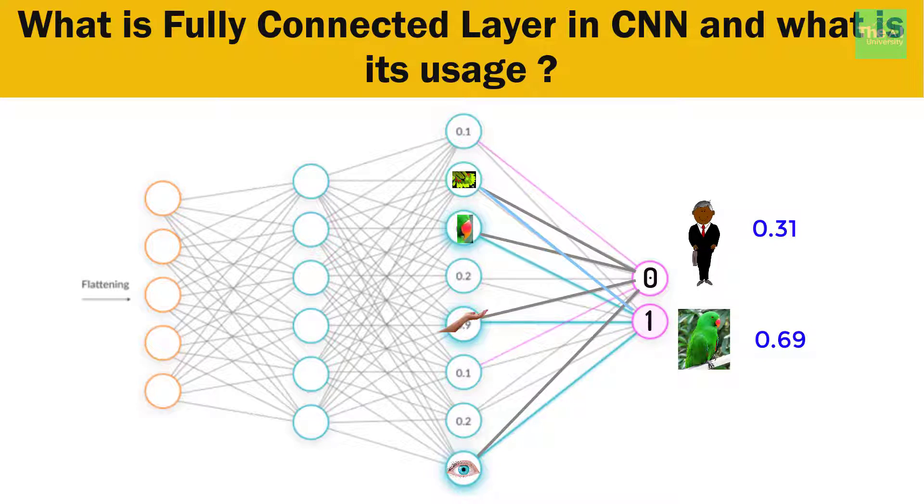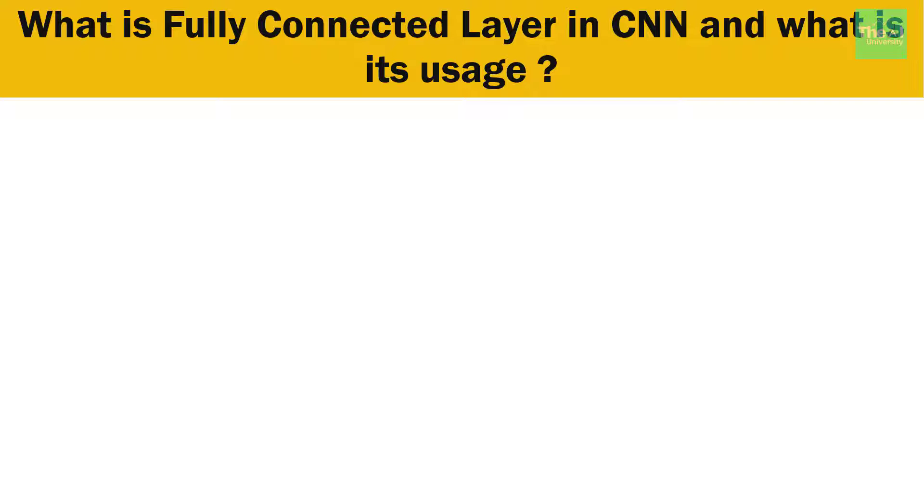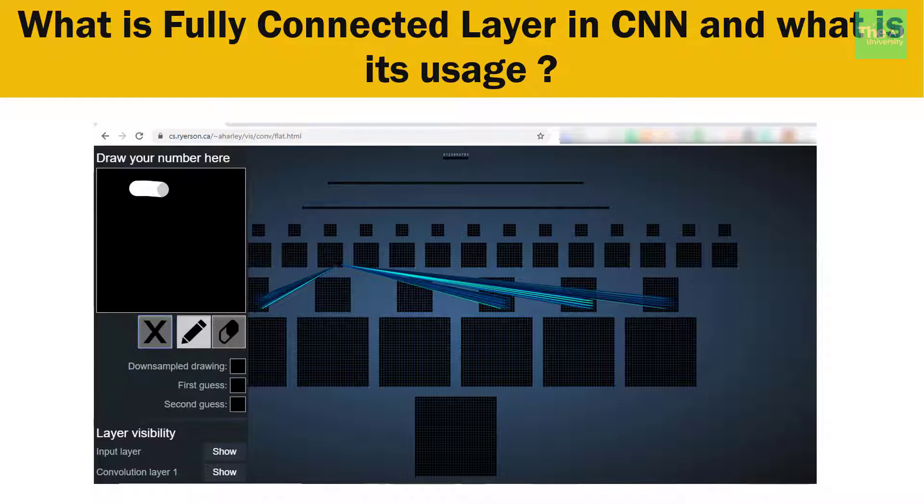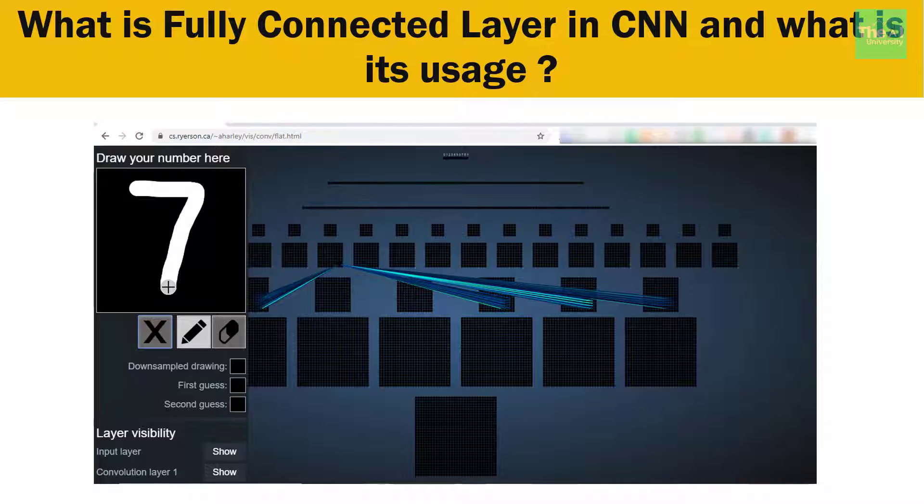Now let me show you one tool using which you can see various layers of an image in real time as and when you draw that numerical digit on the screen. This tool is created by a gentleman called Adam Harley. I will provide the link of this tool in the description section of this video. So this is the tool. Now let me draw any digit here. Let's say I want to draw 7. So if you see at the bottom, this is our image of number 7.